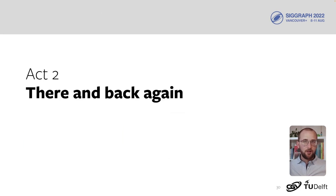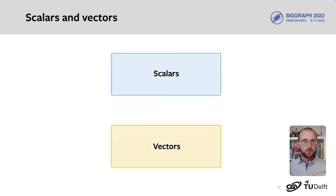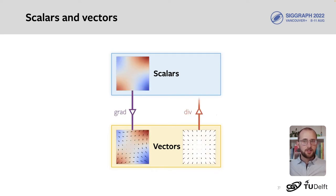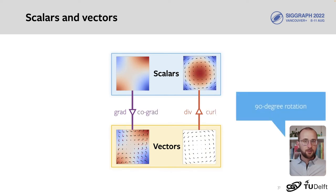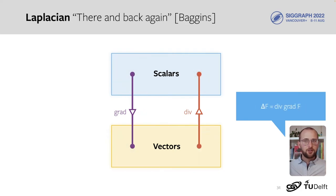We use these operators in a neural network to compute local features. We start with the observation that each operator either outputs scalars or vectors. Gradient maps from scalars to vectors, and divergence from vectors to scalars. Co-gradient and curl are simply 90-degree rotations of gradient and divergence. For the Laplacian, we have to compute two derivatives, which means we go there and back again.